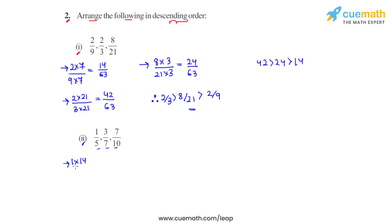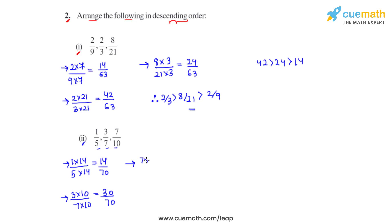To make the denominator of the first fraction 70, we multiply numerator and denominator by 14, giving us 14 over 70. For the second fraction, we multiply by 10 in the numerator and denominator, giving us 30 over 70. For the third fraction, we multiply by 7 in the numerator and denominator, giving us 49 over 70.